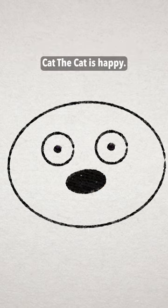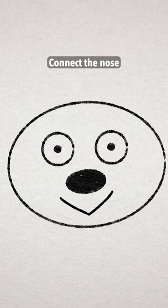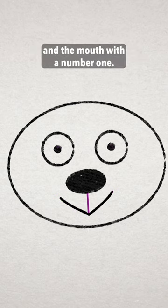Cat the Cat is happy. Let's draw a small letter V for her smile. Connect the nose and the mouth with the number one.